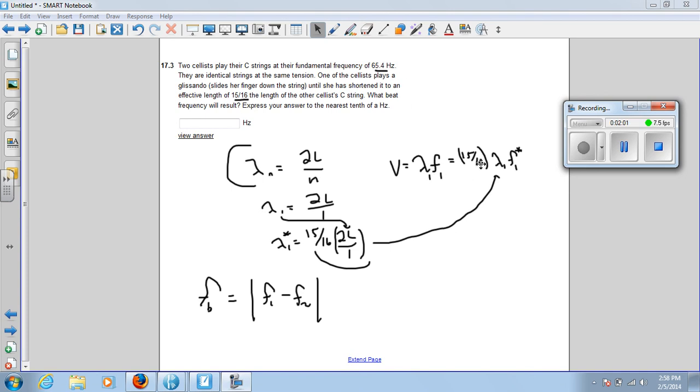So lambda 1 f1 of the first cellist should equal lambda 1 f1 of the second cellist, but her lambda is smaller.